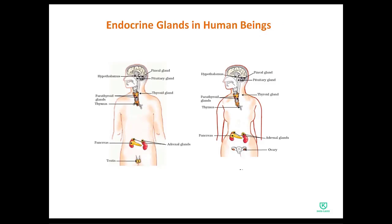Now you can see a diagram of the endocrine glands in human beings, with one side male and the other side female. In the male structure: the pituitary gland is located below the hypothalamus in the brain; the thyroid gland is in the throat/neck area; the parathyroid gland is below that; then the thymus; then the pancreas; the adrenal glands sit atop the kidneys; and the testes are at the bottom.